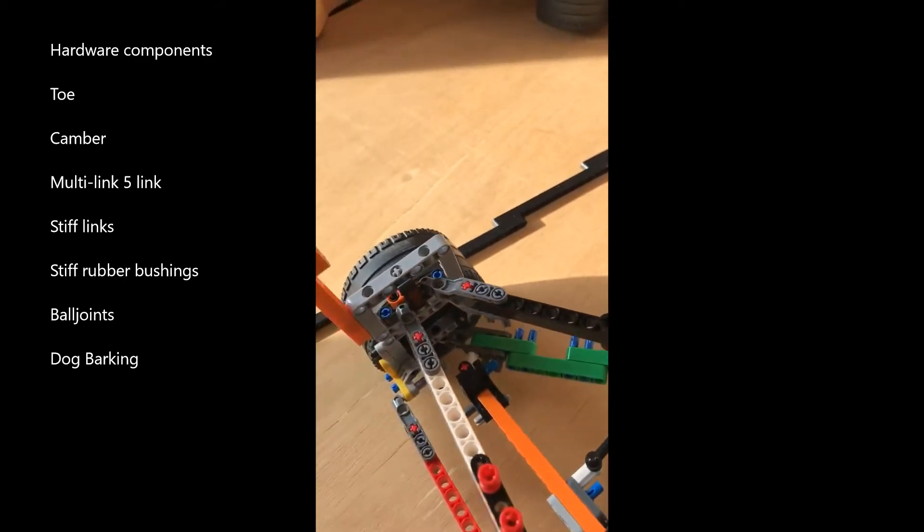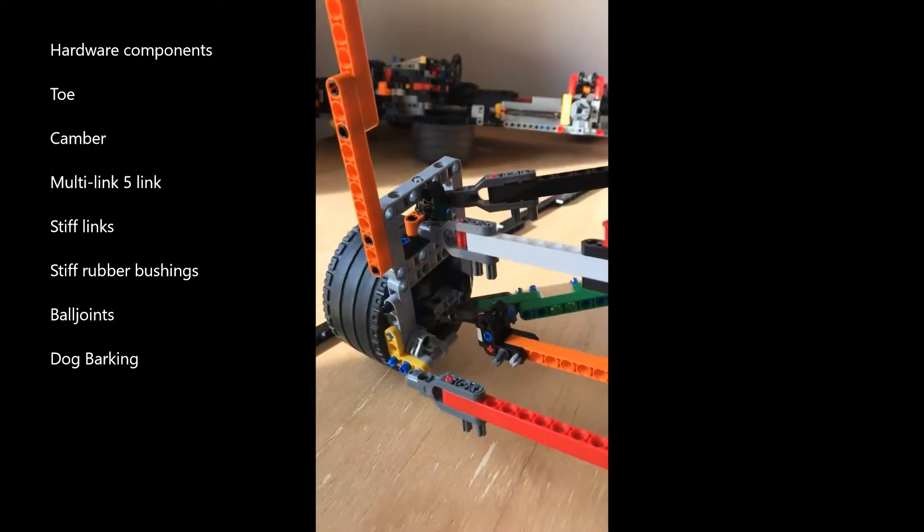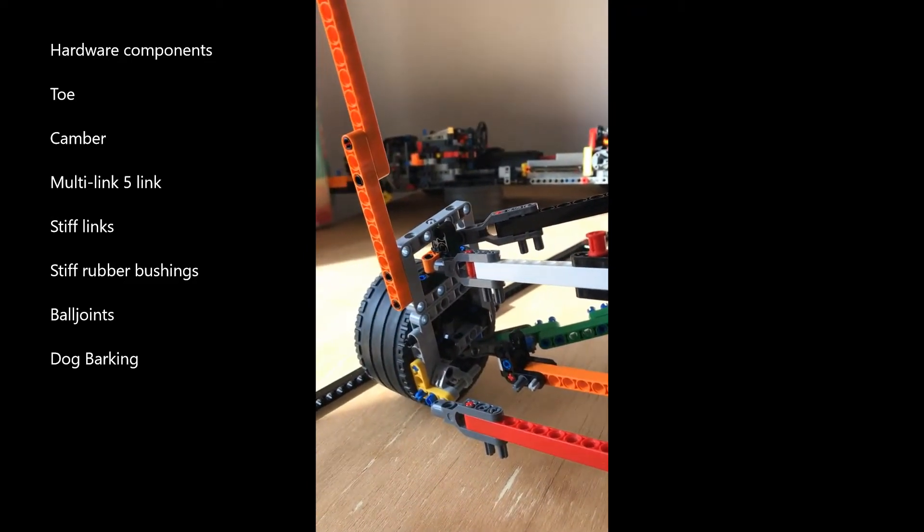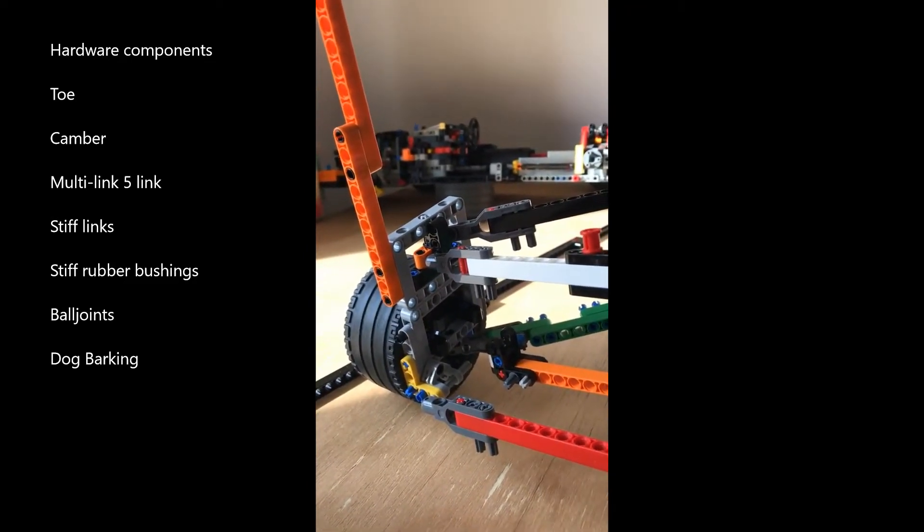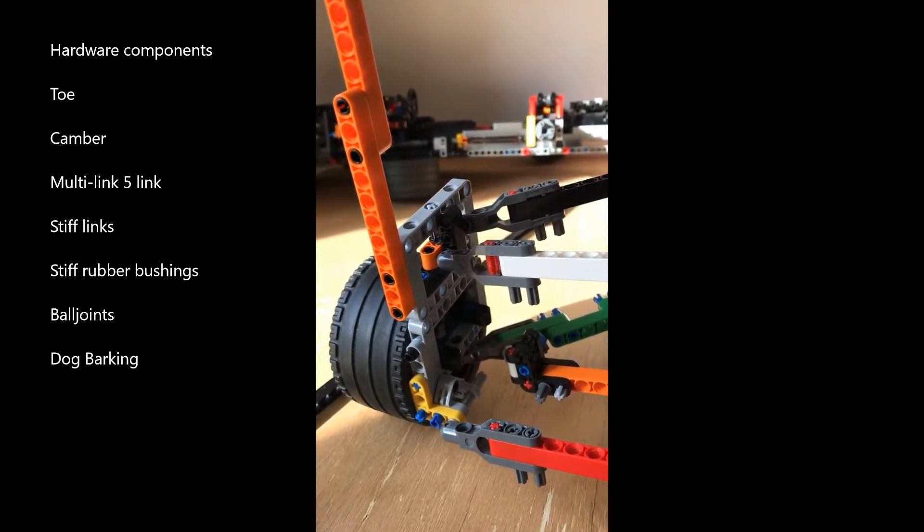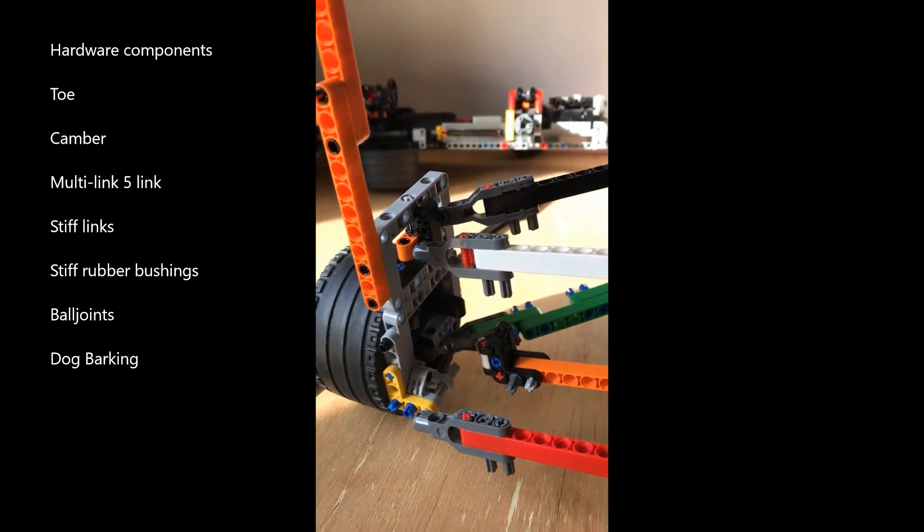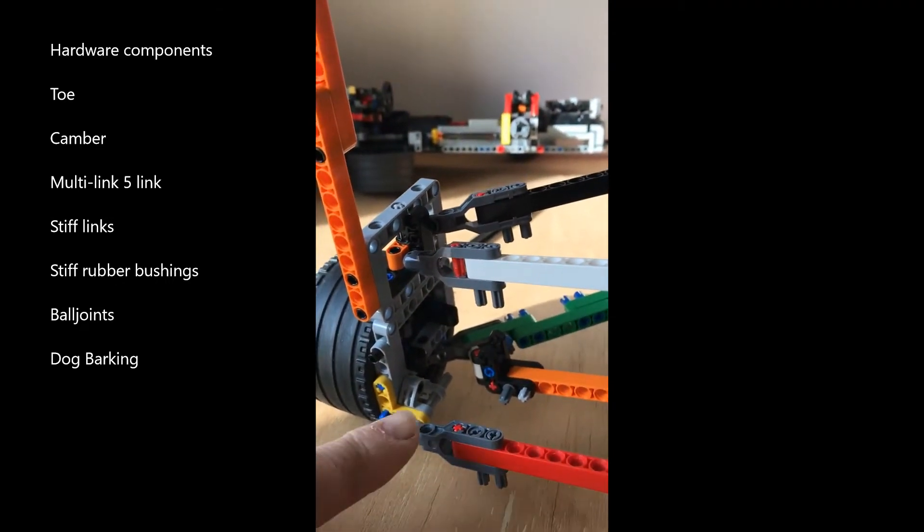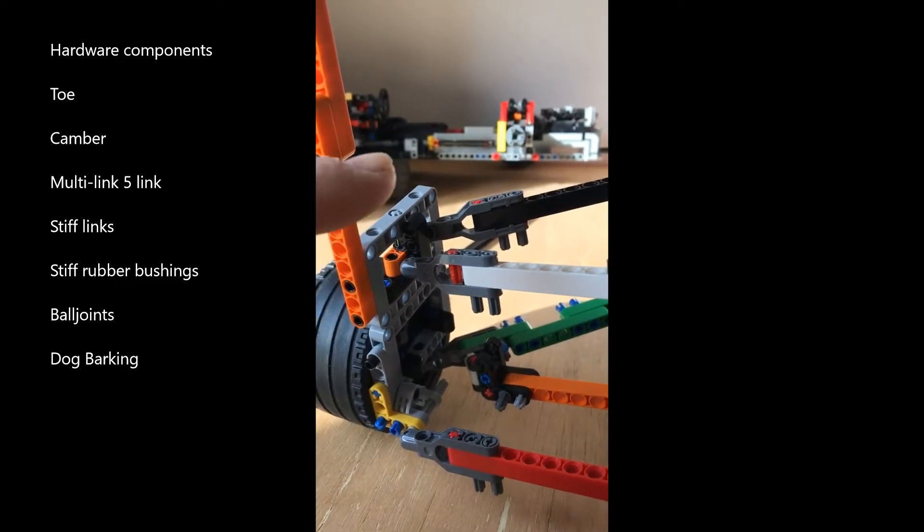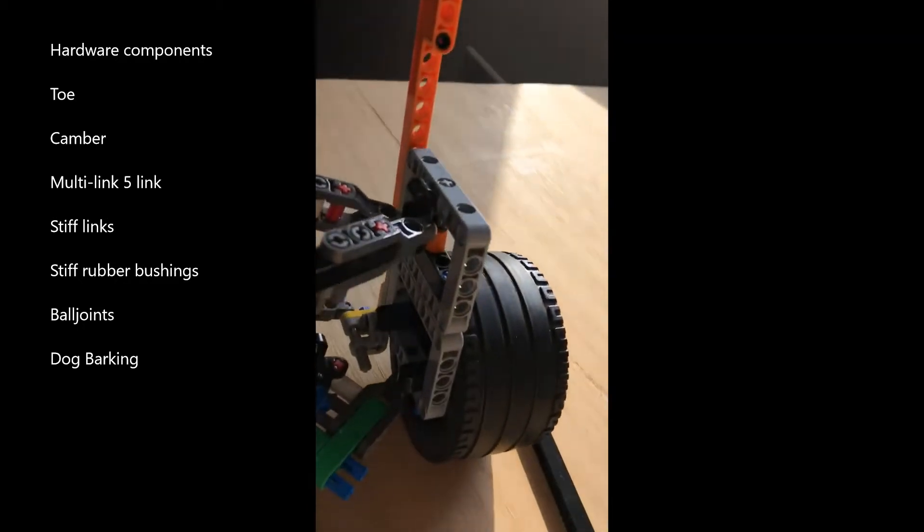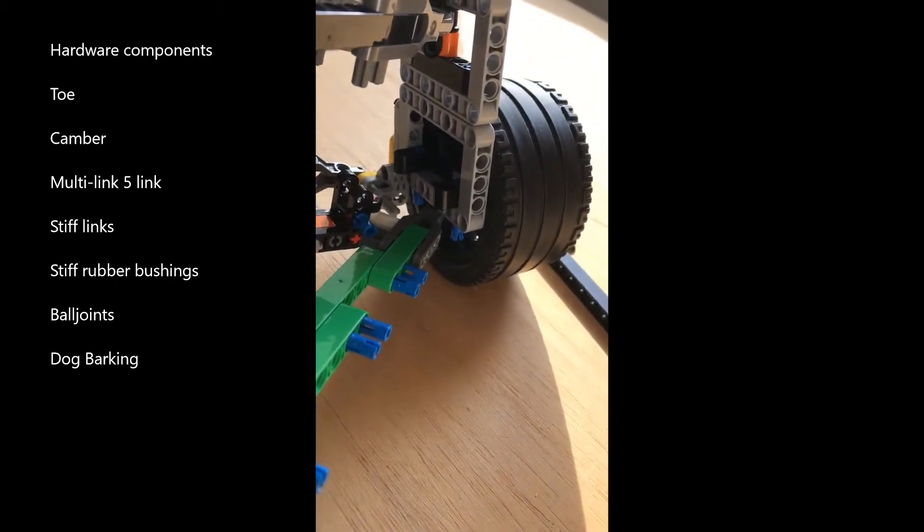On the outboard we have the wheel carrier which is the grey rectangle. That's the wheel hub and that carries the wheel. And connected to the wheel carrier are the links terminated by ball joints. And you can see there we've got one, two, three and fourth ball joint down there.